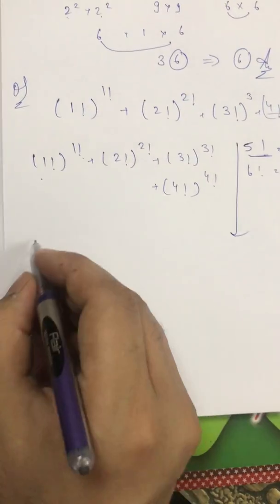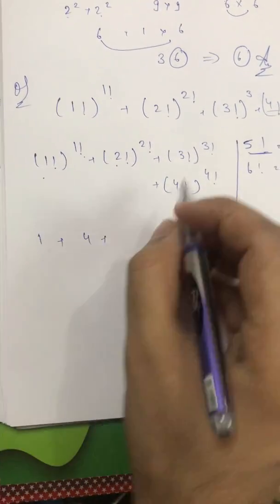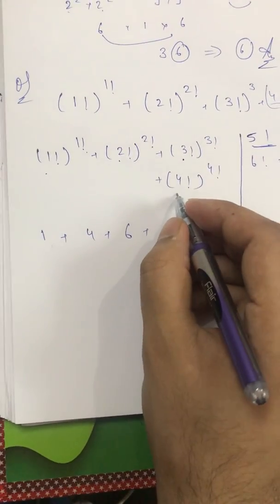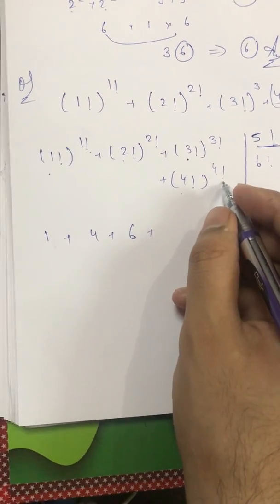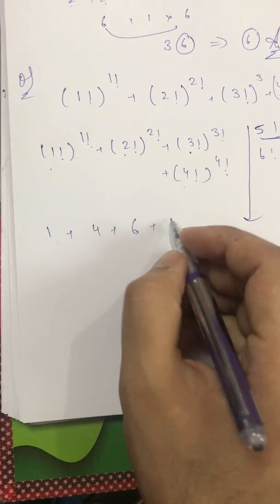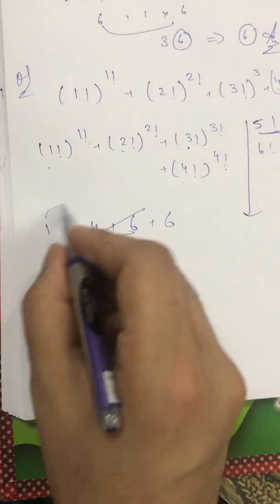I will check for this. So factorial 1 is 1, 1 raised to power 1 is 1. Factorial 2 is 2, 2 raised to power 2 is 4. Factorial 3 is 6, 6 raised to power any value is 6. Factorial 4 raised to power 24, 4 raised to power 24 that is even value so 4 to even value is 6. So 6, 4, 1, 0 unit digits is 0, 6 plus 1 is 7.